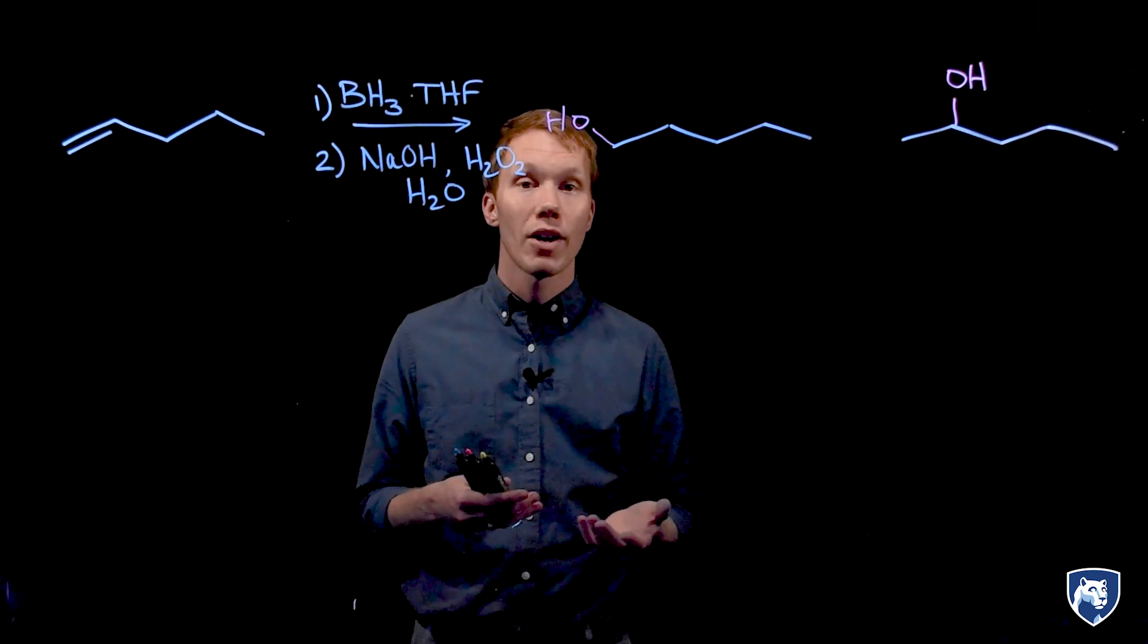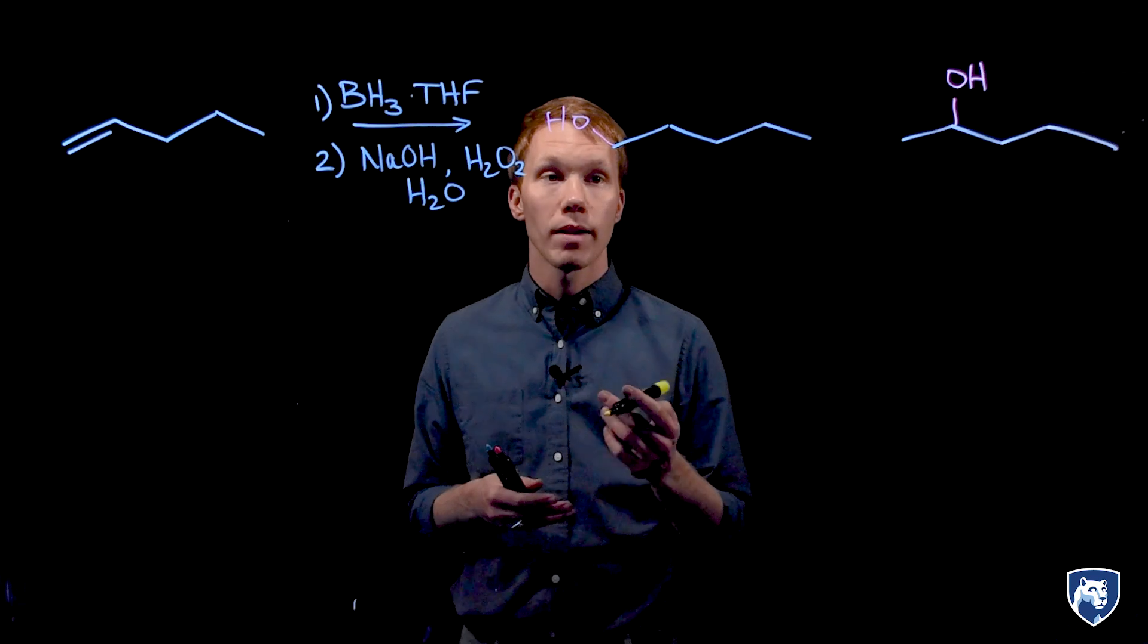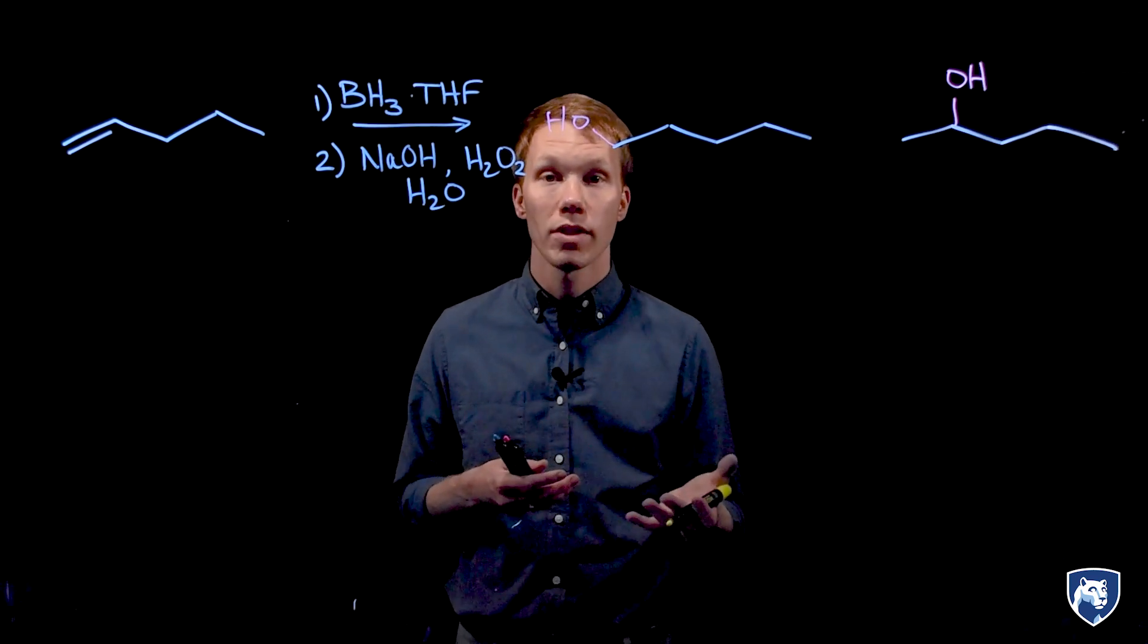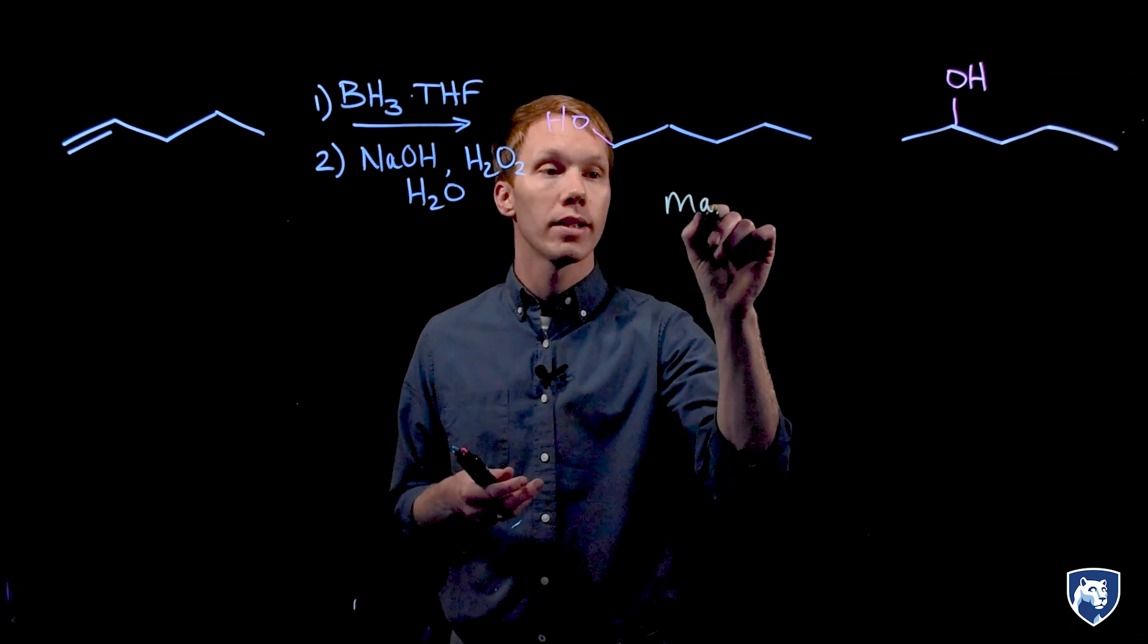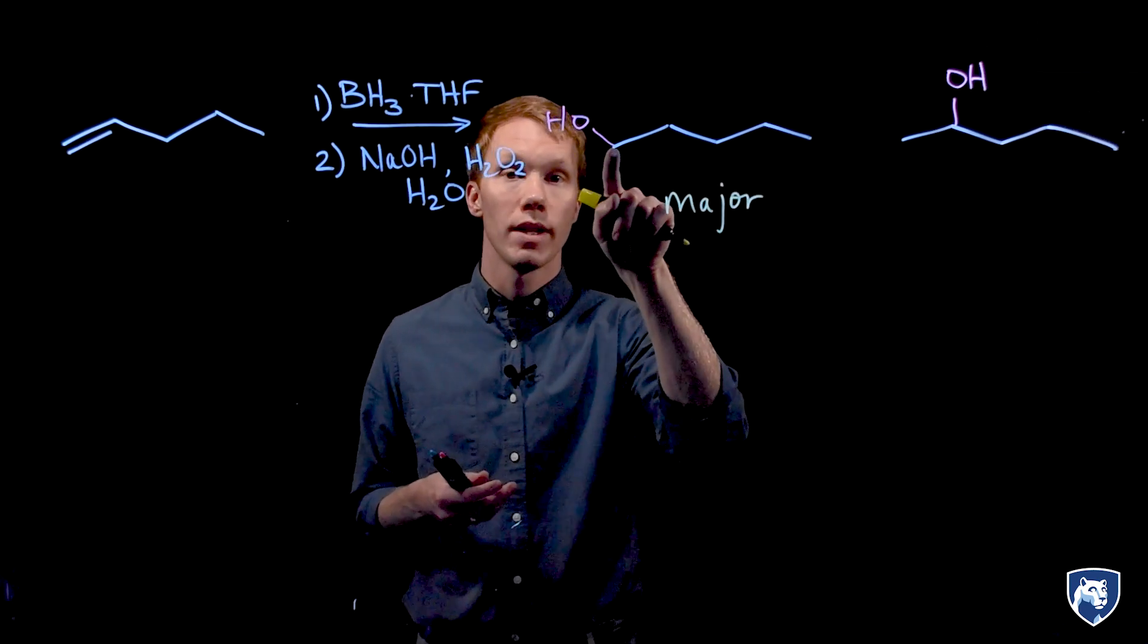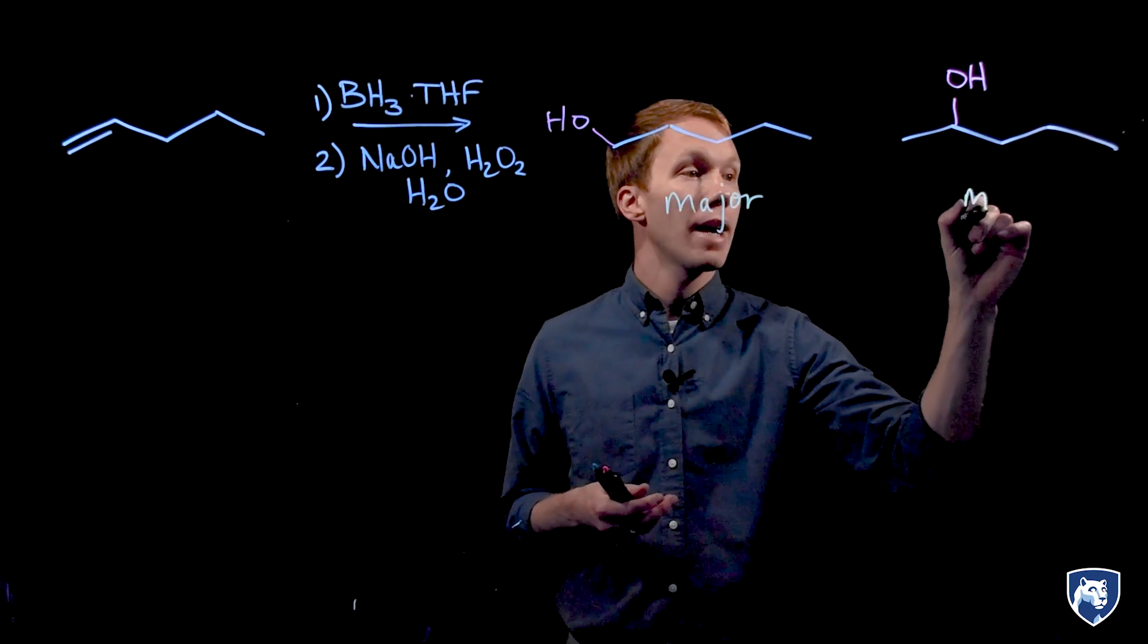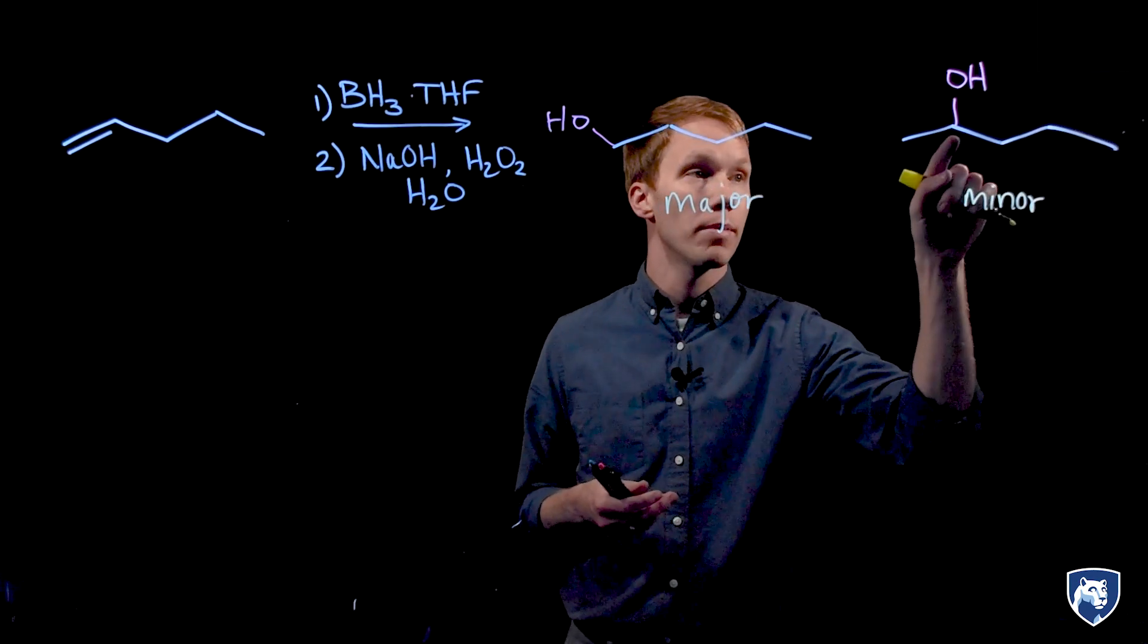When this reaction is carried out in the lab, we can analyze our product mixture to find if one or more constitutional isomers are produced in excess of the other. What we find is that our major product is the less substituted alcohol, and our minor product is the more substituted alcohol.